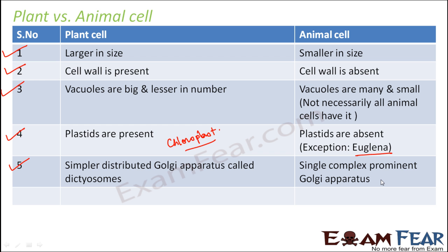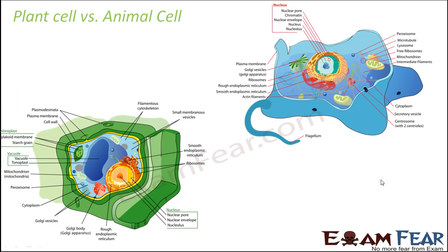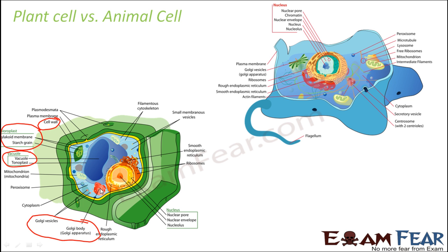These are some of the prominent differences between a plant cell and an animal cell. Looking at the diagrams, we can see the vacuoles which are quite big in the plant cell, but in the animal cell vacuoles are not at all prominent — they might not even have a vacuole. Here we have a cell wall present in the plant cell but no cell wall in the animal cell. Here we have plastids — these green colored structures — but in the animal cell there are no plastids. For the Golgi apparatus, in the plant cell there are Golgi vesicles which are tiny particles distributed throughout, whereas in the animal cell there is just one Golgi apparatus as a single complex structure.